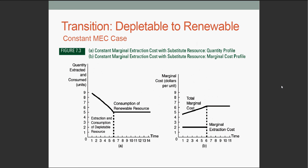Now we will discuss depletable to renewable with constant marginal extraction costs, MEC. We will assume that renewable resources are consumed at a constant rate and cost. The situation is very similar, because once the total marginal cost of the depletable resource exceeds the renewable resource, the consumption switches from depletable to renewable.